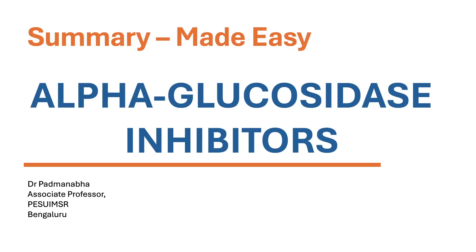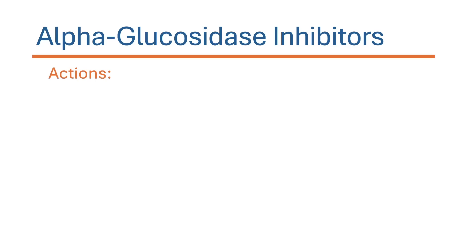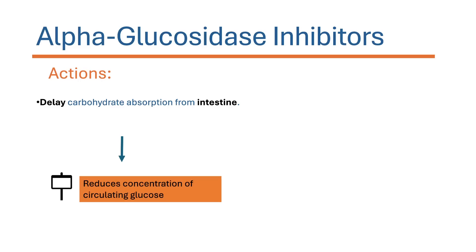Welcome back to this short tutorial on alpha glucosidase inhibitors from I Love Pharmacology. Alpha glucosidase inhibitors are hypoglycemic agents used to reduce blood sugar levels. They act on the GI system, where they delay or reduce carbohydrate absorption from the intestine, thereby reducing the concentration of glucose in circulation.